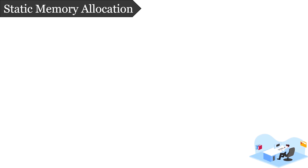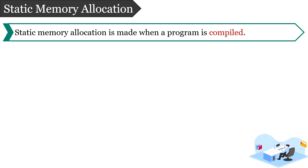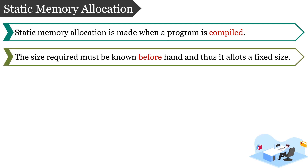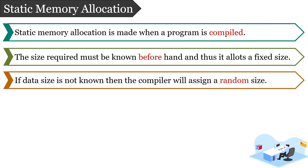Static memory allocation is conducted when you compile your program — at the time of compilation, memory is allocated to elements of the program such as variables, instructions, etc. For this kind of allocation, the size required must be known beforehand, meaning a programmer must specify the size required for a particular element in the program itself. If it is not specified, the compiler assigns a random memory size.